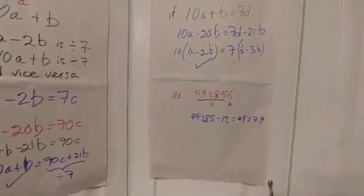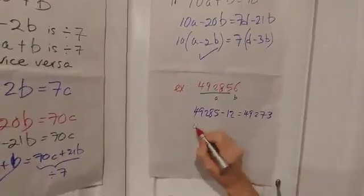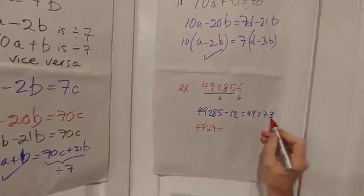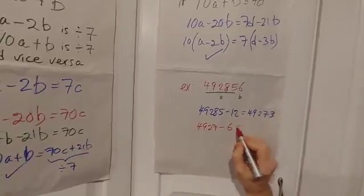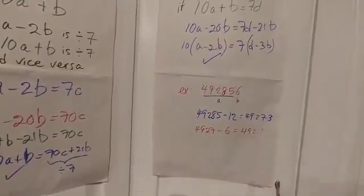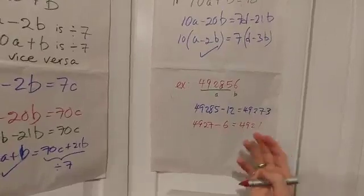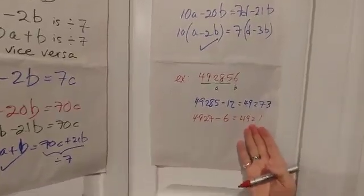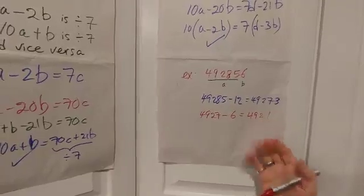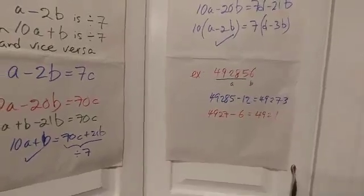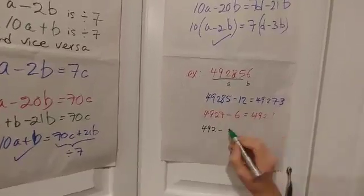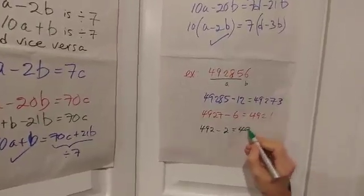So let's say we take the first four digits, 4927, and subtract two times B, which will be six. And I'll get the number 4921. Again, how do I know if that's divisible by seven? Well, if you don't know, and you don't want to use a calculator, just repeat it one more time. So I get 492 minus two times one, which is two, leaving me with 490.